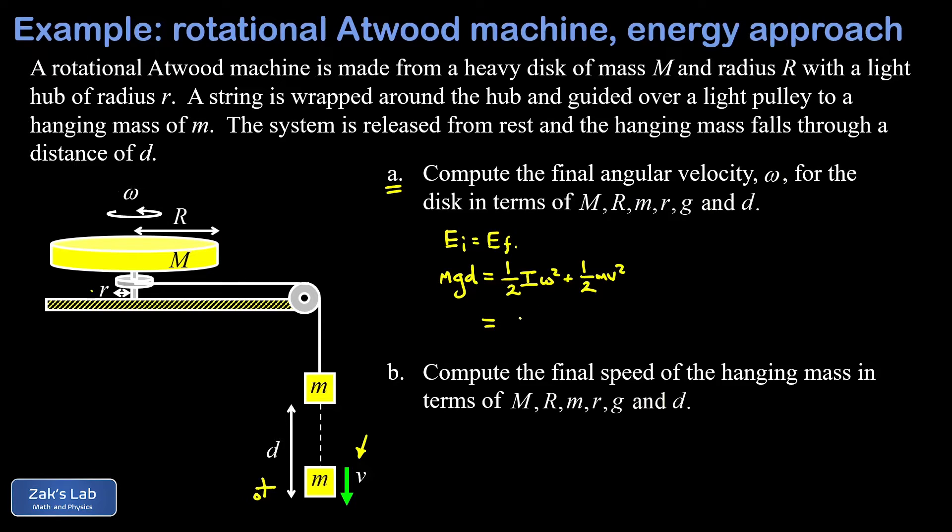In the next line we'll plug in a couple details. First, I want to express the moment of inertia of the disk in terms of its mass and radius, and that turns out to be one half MR squared. I'll post a link to the video where that was first derived.